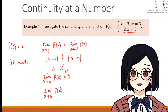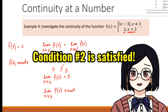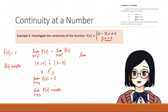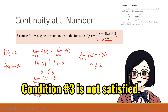We can conclude that the limit of f(x) as x approaches 3 exists, satisfying the second condition of continuity of a function at a number. For the last step, we investigate whether the limit of f(x) as x approaches 3 equals f(3). From step 2, the limit is 0, whereas f(3) is 2. Since 0 is not equal to 2, the third condition is not satisfied.